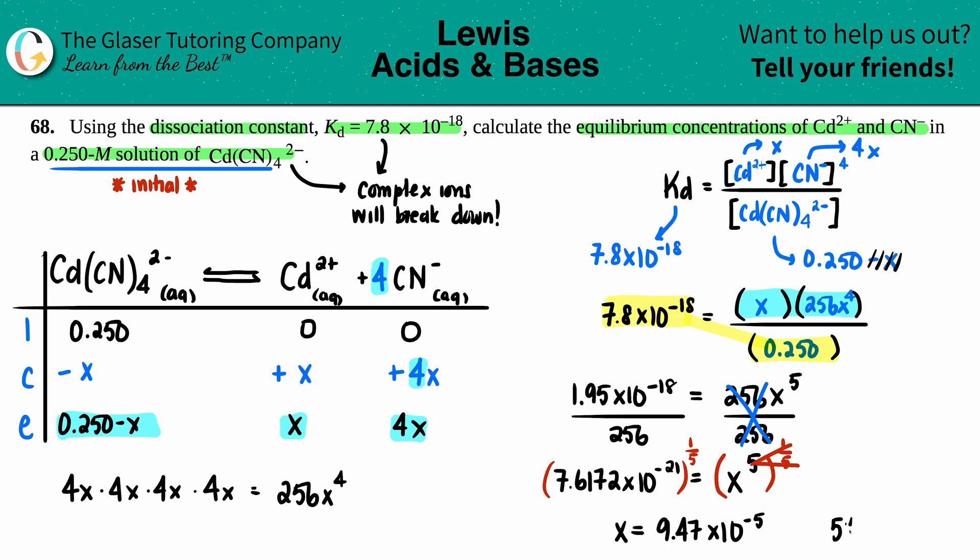Let's perform the five percent rule because we did assume. We're going to take that number and divide by the initial, and since we want a percent, we times it by 100. If this is five percent or less, we assumed correctly. 9.47 times 10 to the negative fifth divided by 0.25 times 100, and I don't even get one percent. So we're way good, and this is molarity.